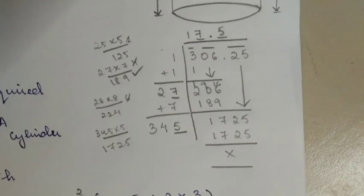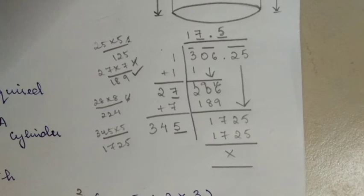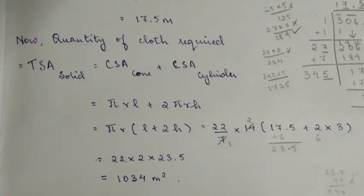The slant height calculation gives us 306.25 under the square root, which we solve using the division method. After computing the square root of 306.25, we get the slant height value. Let's verify this using the division method step by step.